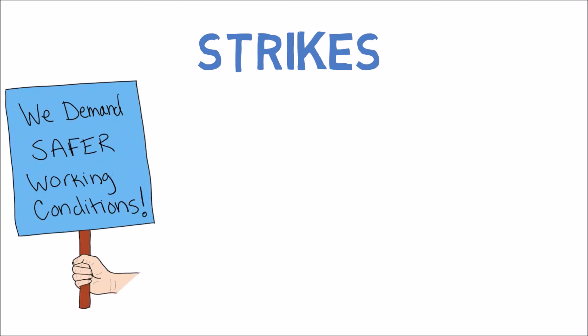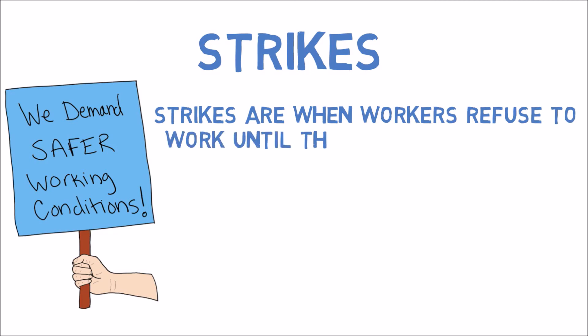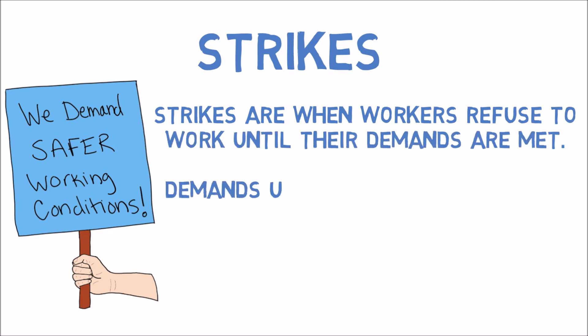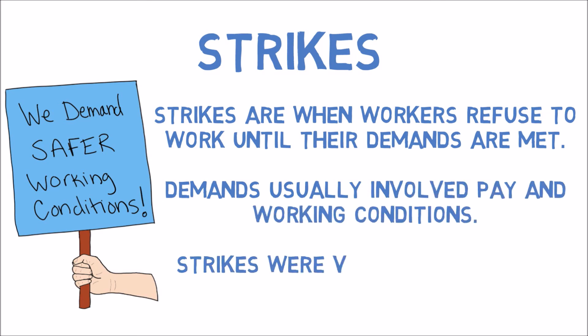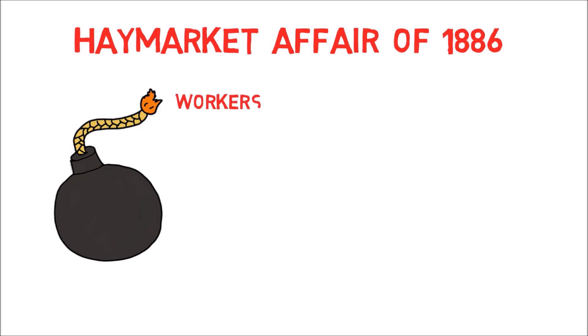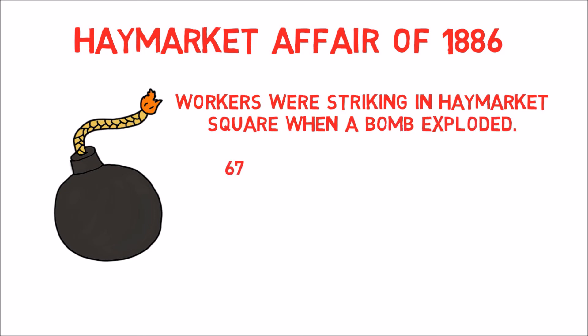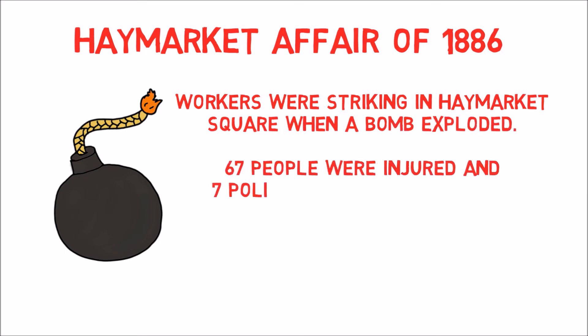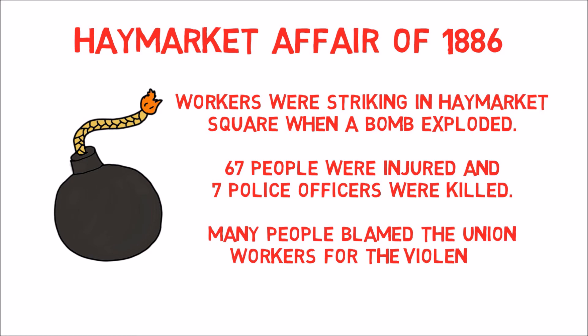Strikes are when workers refuse to work until their demands are met. Demands usually involved pay and working conditions. Strikes were very common in the 1880s and 1890s. In the Haymarket Affair of 1886, workers were striking in Haymarket Square when a bomb exploded, injuring 67 people and killing 7 police officers. Many people blamed the union workers for the violence.